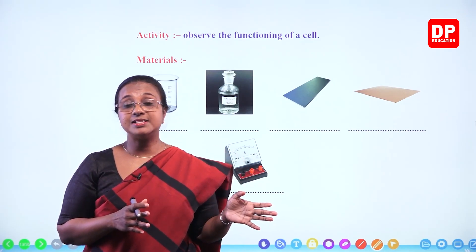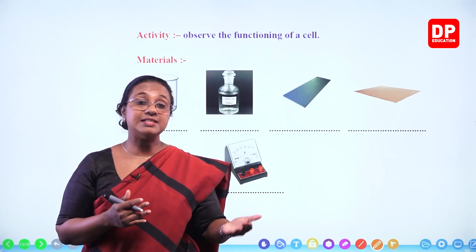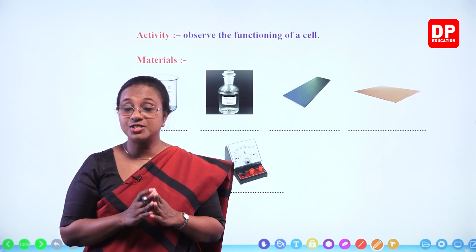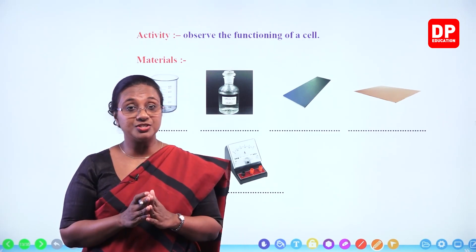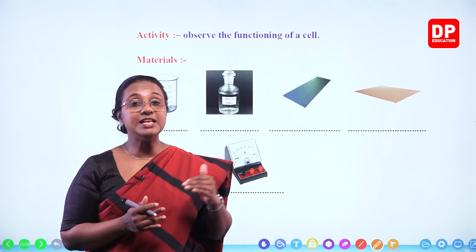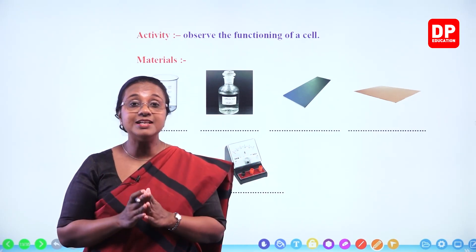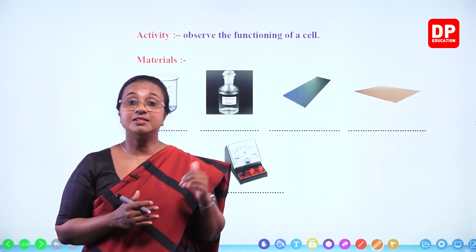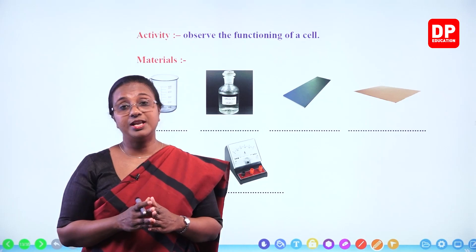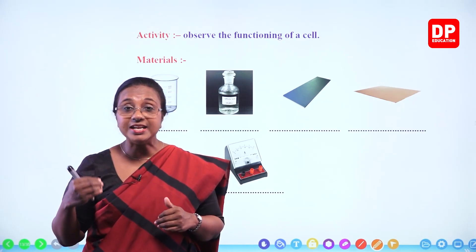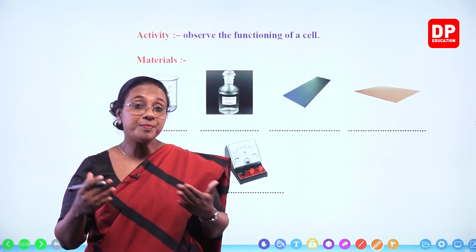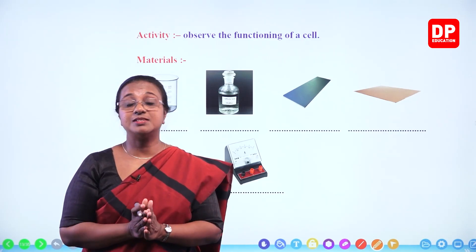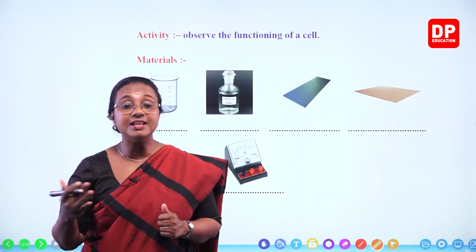At the same time, H⁺ ions in the solution take up electrons and become H₂ gas. When you add those two reactions — known as half ionic reactions — you get the balanced ionic equation: Zn(s) + 2H⁺(aq) → Zn²⁺(aq) + H₂(g). From there we were able to write the balanced chemical equation: zinc reacts with sulfuric acid giving rise to zinc sulfate and H₂ gas.